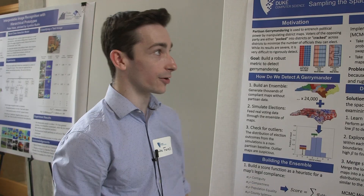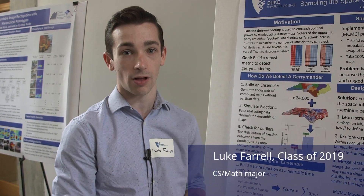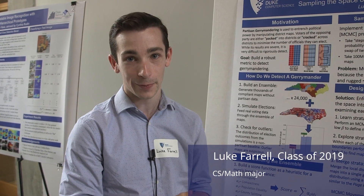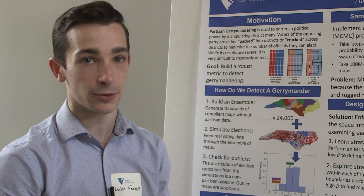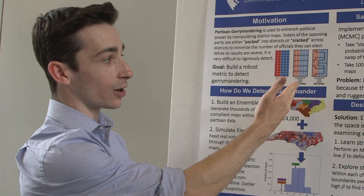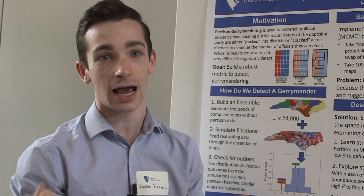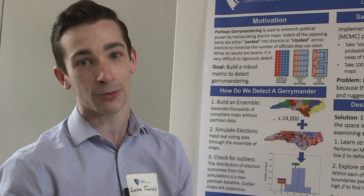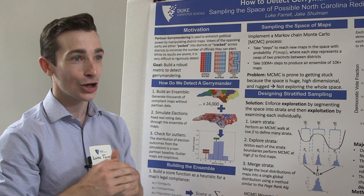Quantifying gerrymandering — so how do we detect gerrymandering here in North Carolina in a mathematically rigorous way? You can have a district that's 60% blue and 40% red, and you get an outcome where blue wins or red wins based on how you draw the map. How you draw the maps is absolutely essential to the actual outcome we're producing.